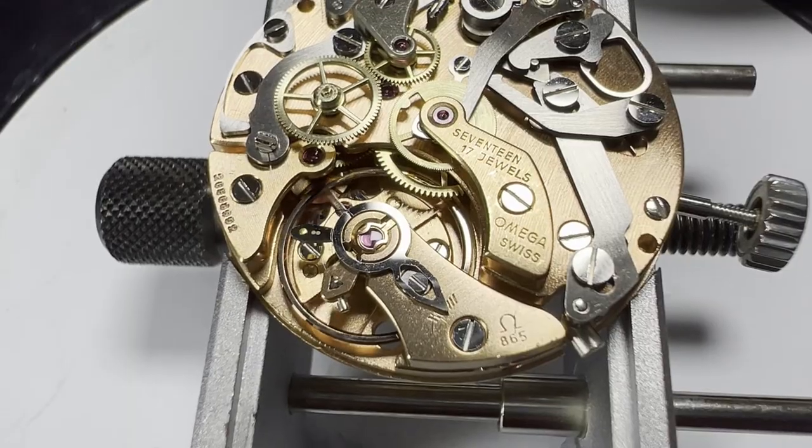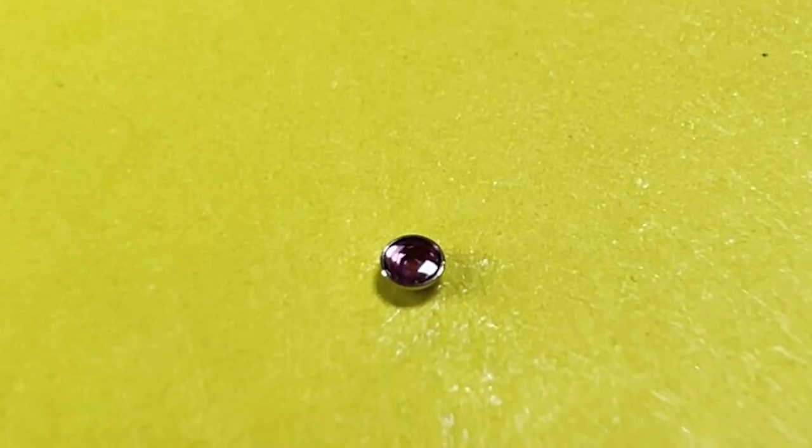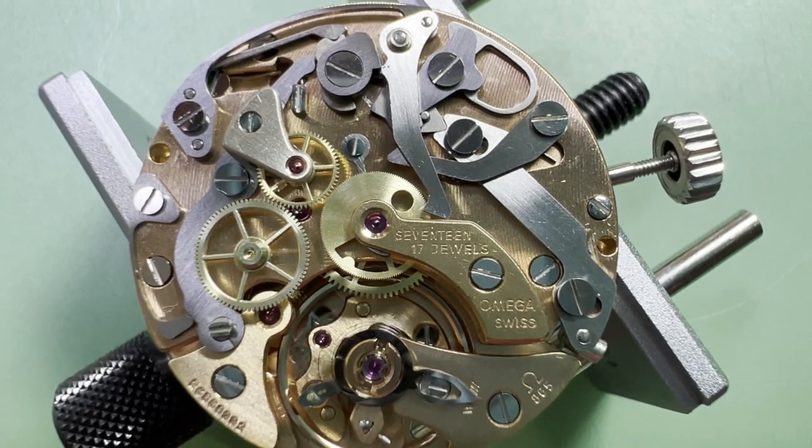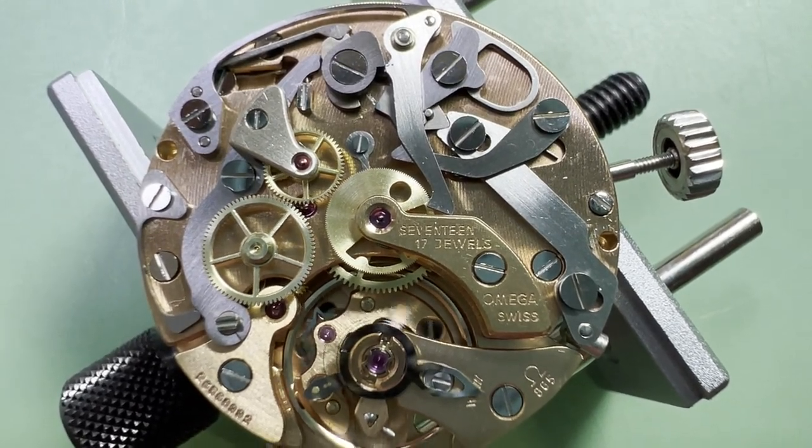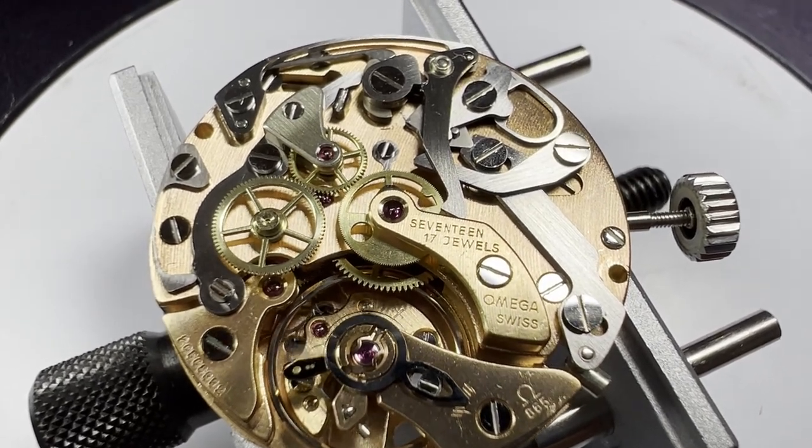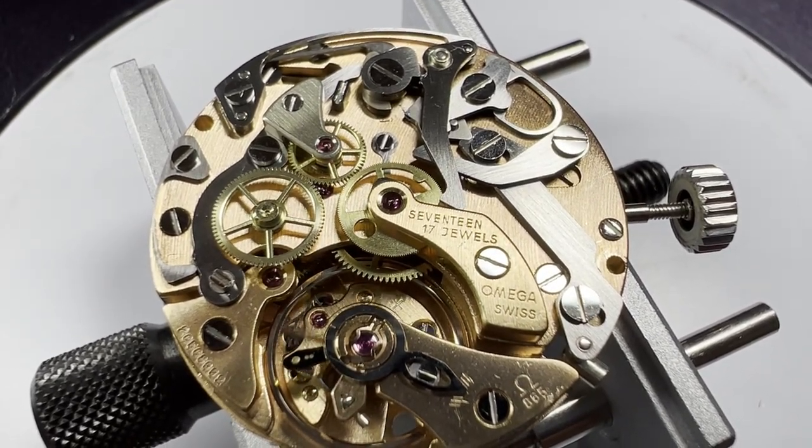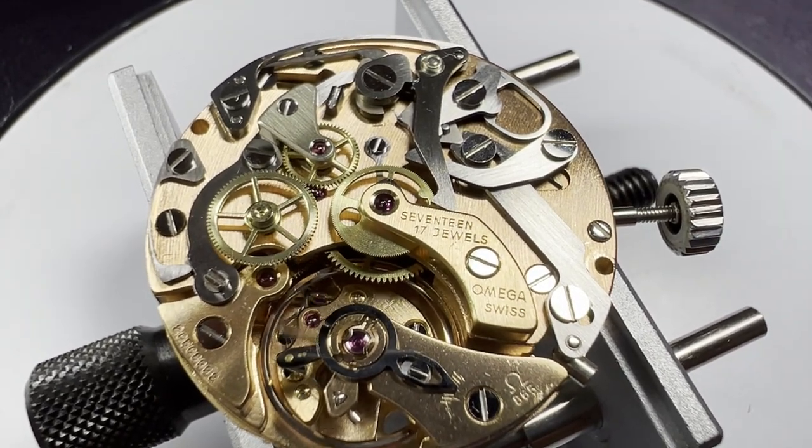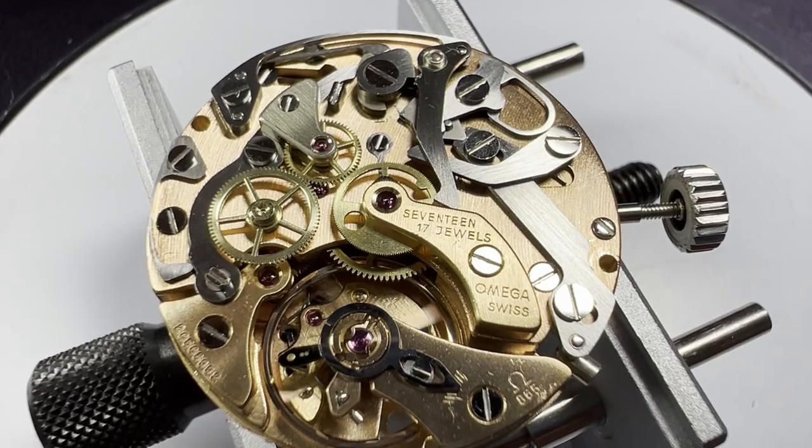Back on the back, we put the balance back on, then clean and oil the cap jewels on both sides of the balance. With the watch movement up and running, we can make some small adjustments to the chronograph if necessary. In this watch's case, the hammer struck true, but the depth of engagement of the teeth between the drive wheel and clutch and clutch and seconds wheel was very low. So they were adjusted so more of each tooth was in contact with the next wheel.